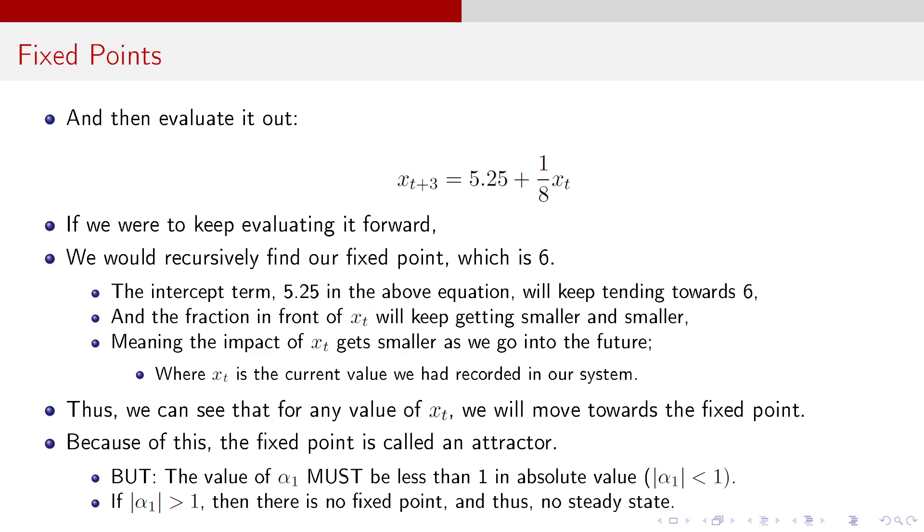Evaluate it out some more. I get X_{t+3} equals 5.25 plus 1/8 X_t. And if I were to keep evaluating this forward, I would recursively find my fixed point, which is 6. That intercept term, 5.25, is going to keep tending towards 6, and the fraction in front of that X_t is going to get smaller and smaller. So, it's going to make that overall value converge to 0, while that intercept term converges to 6. Thus, the impact of X_t gets smaller and smaller as we go into the future. Remember, X_t is like the current value that we had recorded in our system. So, we can see for any value of X_t, we're going to move towards that fixed point. And because of this, well, that fixed point is an attractor. But here's the caveat.